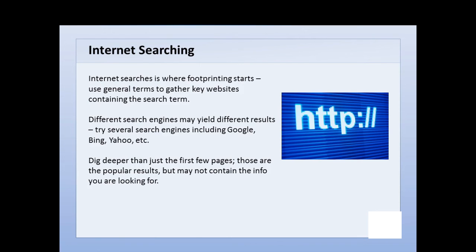You would use different search engines because you may get different results with each one. Try Google, Bing, Yahoo — by and large you'll get the same results but they may be ordered differently. Also dig deeper than just the first few pages. You may get 50,000 hits in a general search, and those are typically the most popular results, but those may not contain the information you're really looking for about the organization.